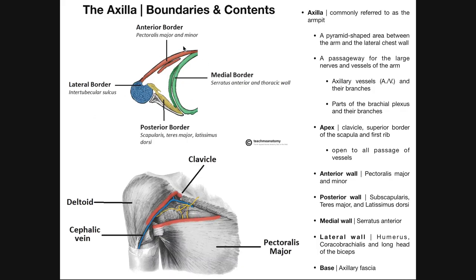We're looking at a superior view of somebody's shoulder region, specifically focused on the axilla. Here's that space right here — this is going to be where those nerves and blood vessels are traveling. We have the anterior border in red, the medial border in green — you can tell that's the thoracic wall because that looks like a rib. Yellow is the posterior border, and in blue here we have the lateral border.